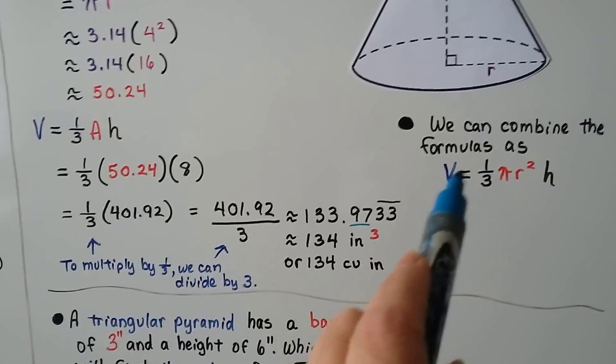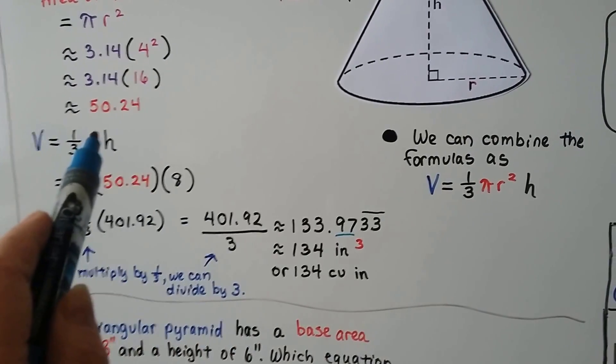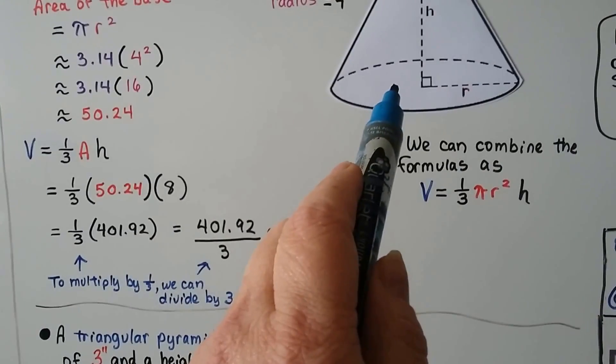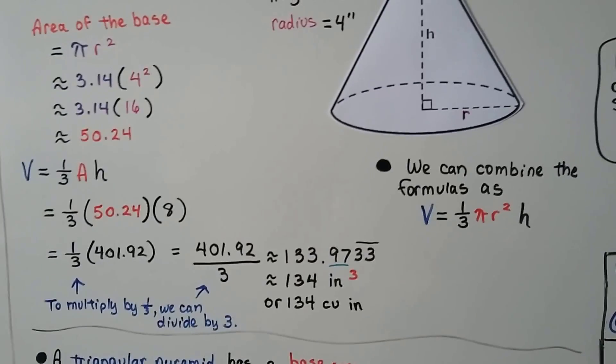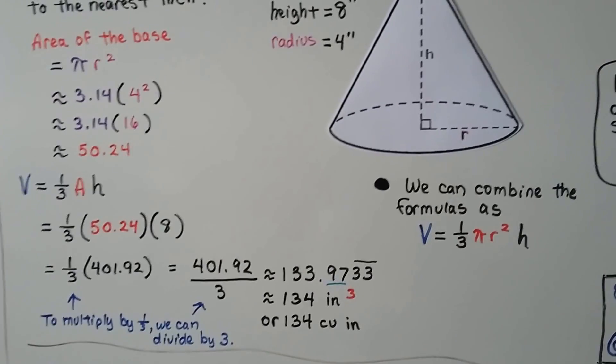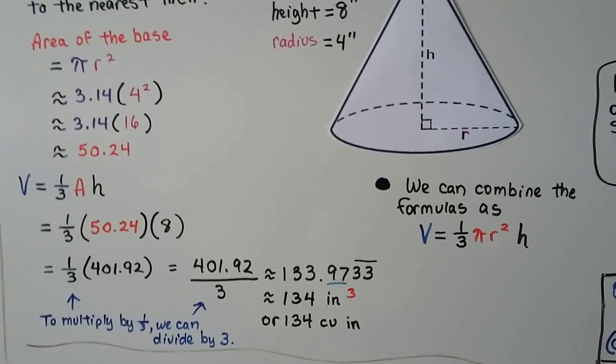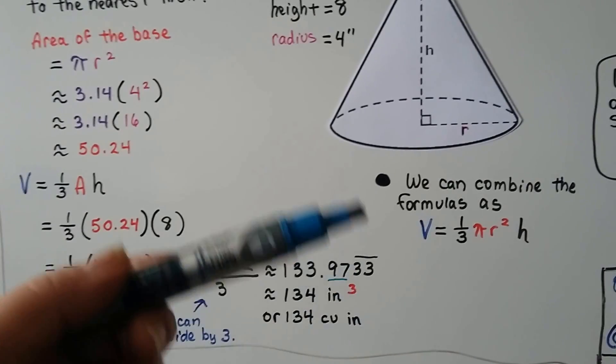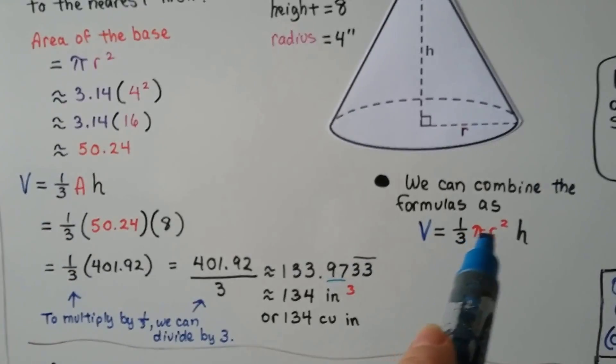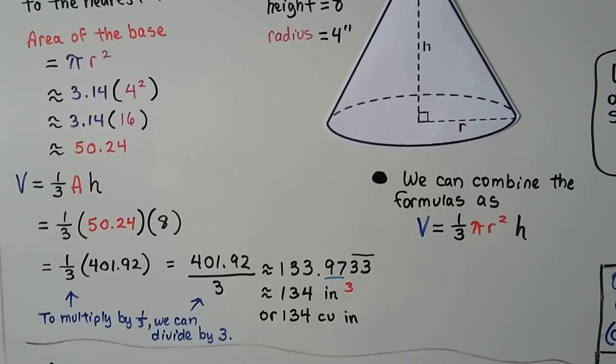And we can combine these formulas. Instead of the a here, the area of the base of this circle is pi r squared. So that would be the formula to solve for the volume of that cone. They might ask you that on the test. And it will give you a choice of different formulas. And it will say which one will find the volume of this cone. Well, know that the a can be replaced with the pi r squared.